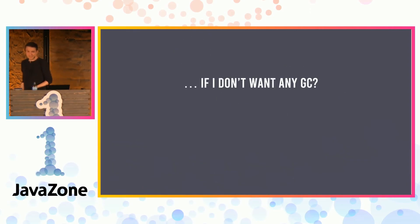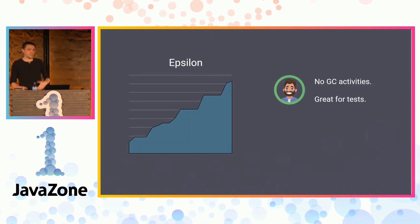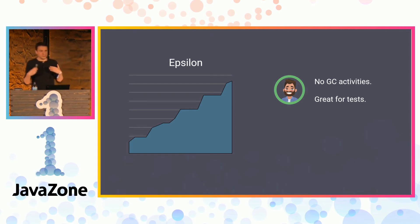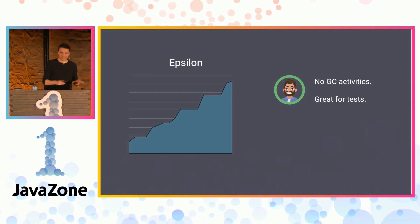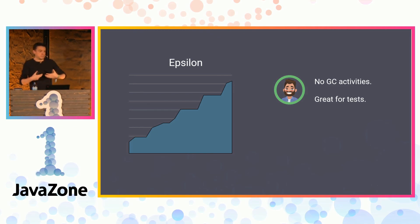We have another option if we don't like garbage collection at all — it's a choice. Can we run without a garbage collector? Yes, we have Epsilon, introduced in Java 11. The main goal of this garbage collector is to let you test your application without being disturbed by a GC. You could also use it in production without any support if your application generates only a few objects and doesn't need memory to be regularly cleaned.